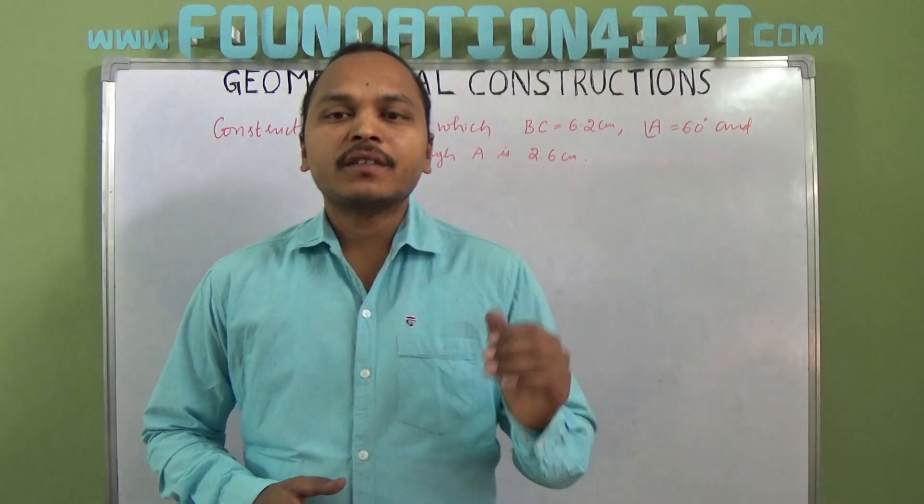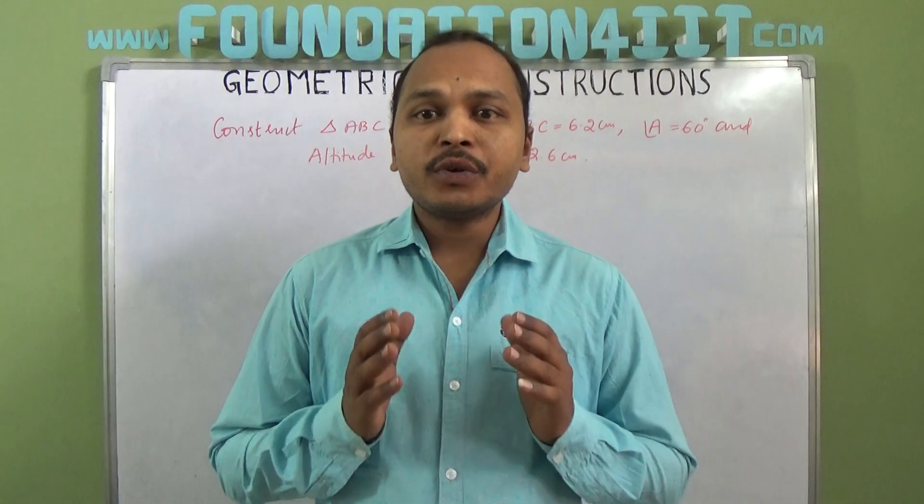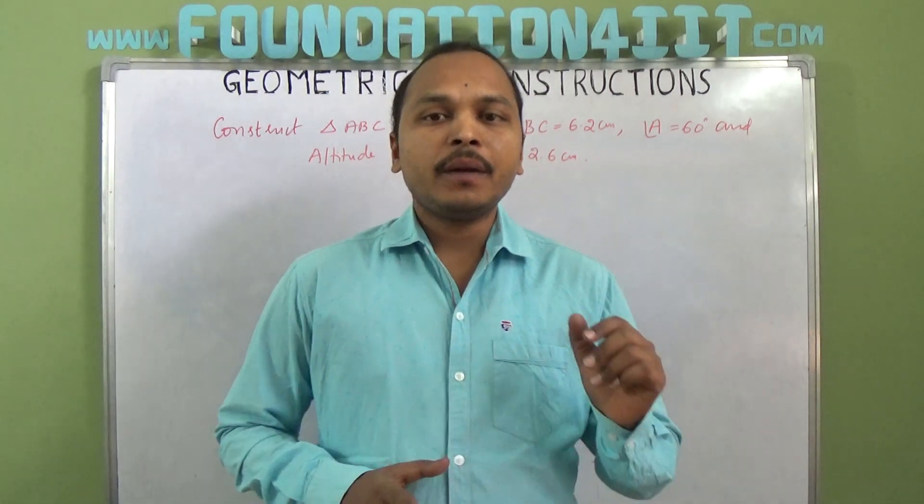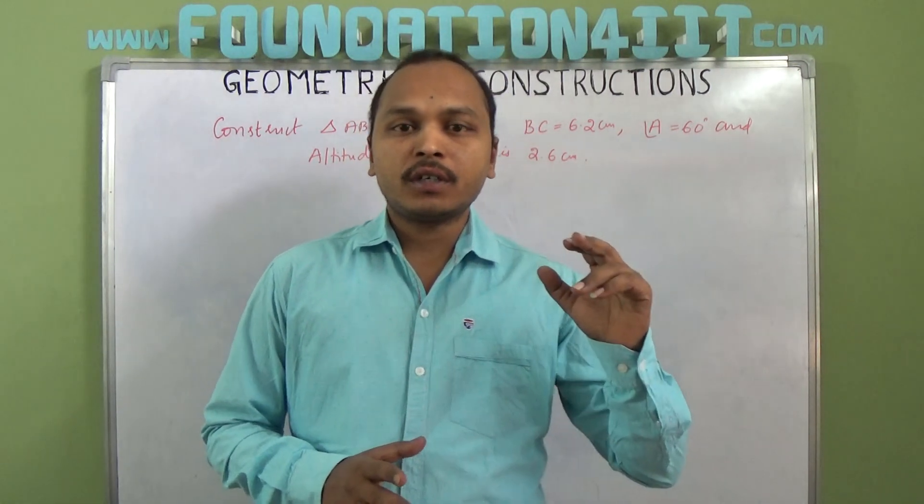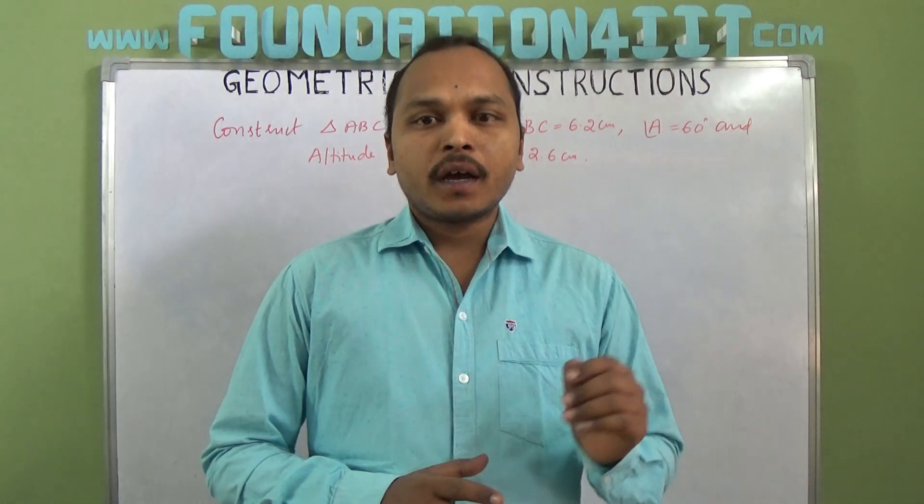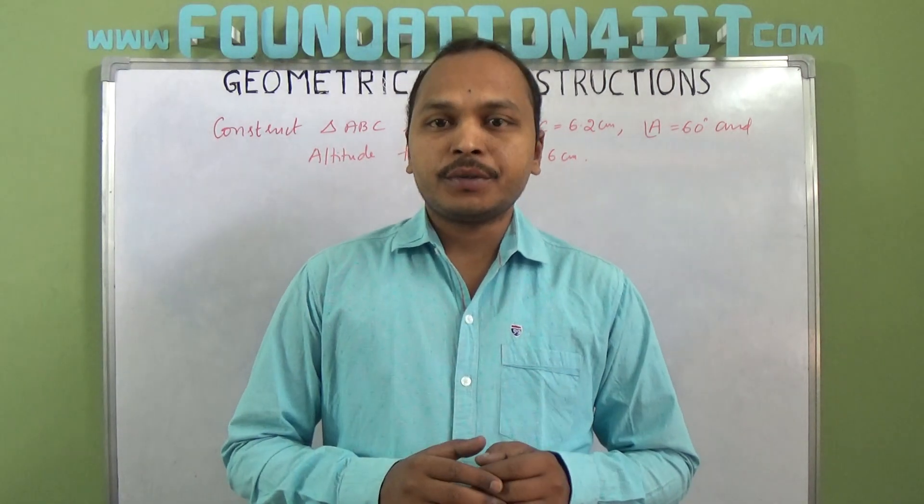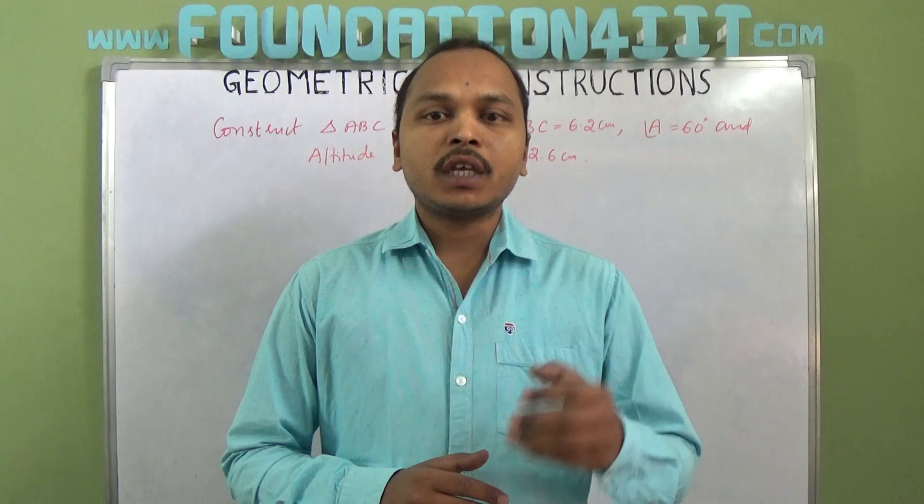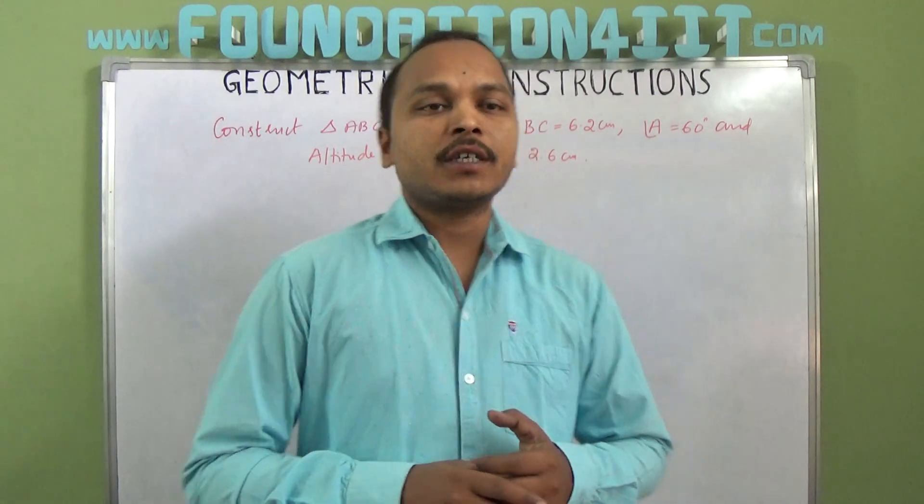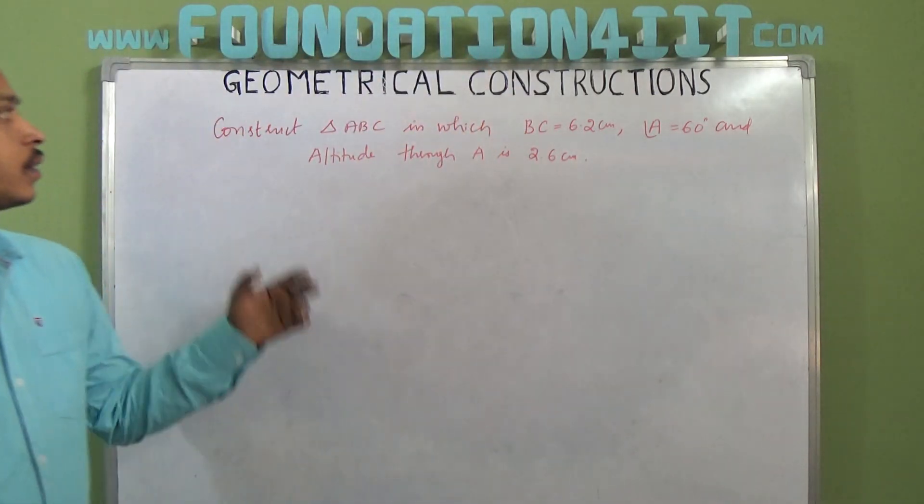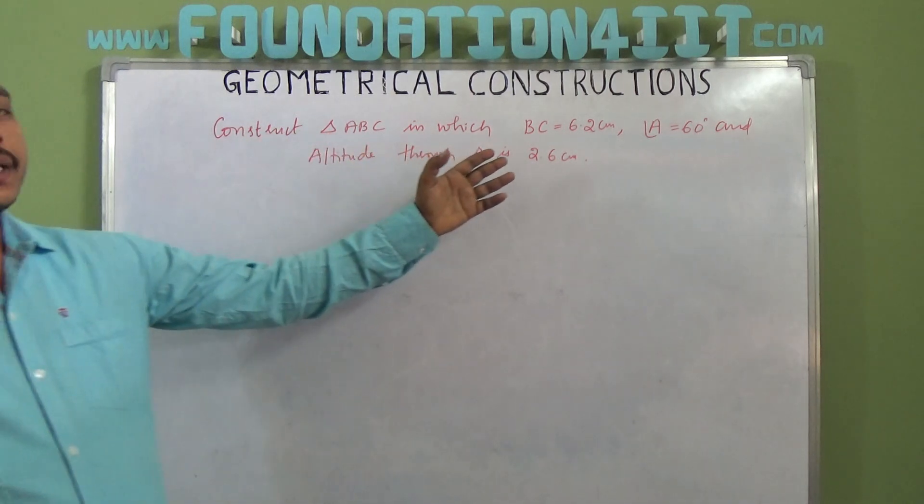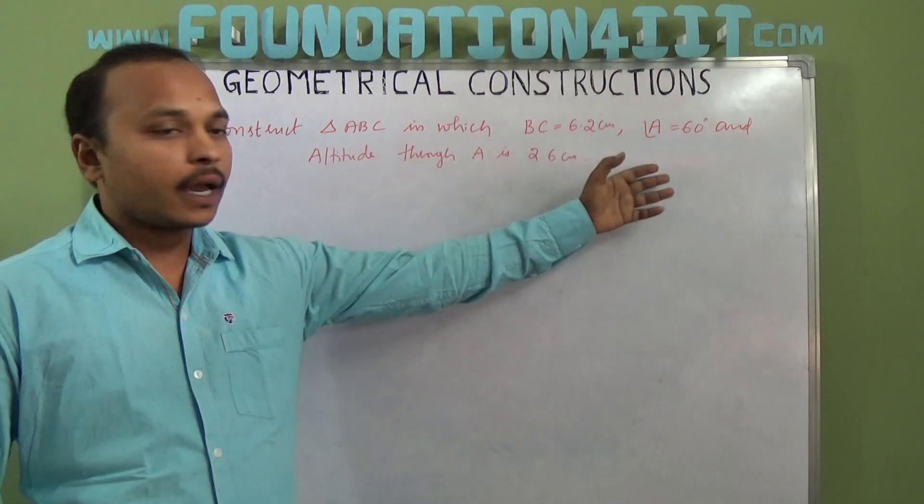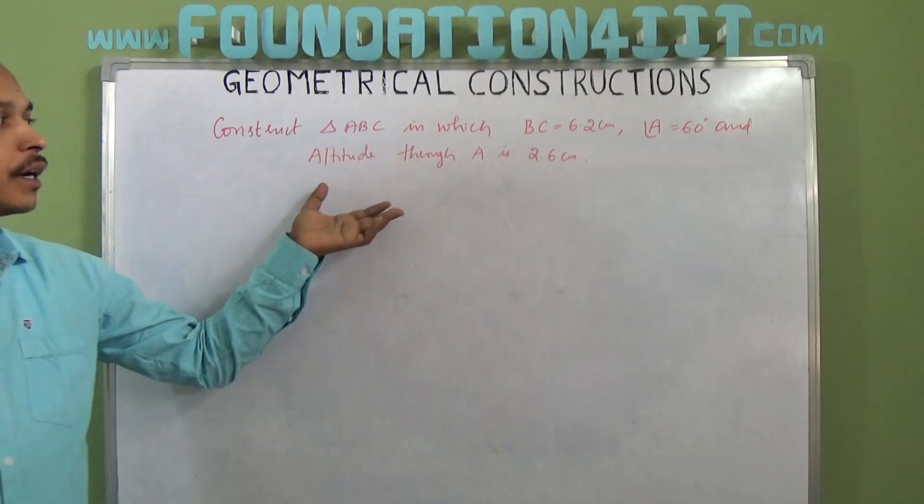Welcome to educational channel. In this video I'm going to explain how to construct a triangle when base and vertical angle are given, along with the altitude from the vertical angle. Let's see the question: Construct triangle ABC in which BC equals 6.2 centimeters, angle A equals 60 degrees, and altitude through A is 2.6 centimeters.